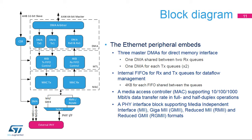This slide presents the peripheral block diagram. The Ethernet peripheral embeds three direct memory interfaces for receive and transmit paths with an internal arbiter. In multiple queue operation, the RX DMA is shared between the two queues, while there is one TX DMA per queue. Internal FIFOs for RX and TX queues handle data flow management. The block also includes a media access controller supporting the functional features detailed in previous slides, offload engines, precision timing protocol, power management, MAC management counters for statistics gathering, and a media-independent interface with a dedicated block for the reduced MII.